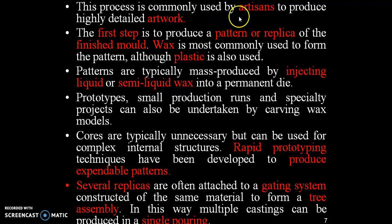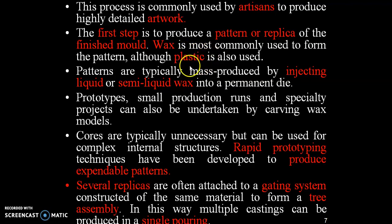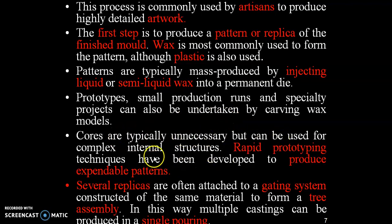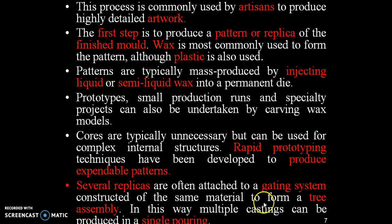Most artisans use the investment casting process for highly detailed artwork. The first step is to produce a pattern or replica of the finished part. Wax is most commonly used, although plastic can replace wax. Patterns are typically mass-produced by injecting liquid or semi-liquid wax into a permanent die. Prototypes, small production runs, and special projects can also be undertaken by carving wax moulds. Cores are typically unnecessary but can be used for complex structures. Several replicas are often attached to a gating system constructed of the same material to form a tree assembly, allowing multiple castings to be produced in a single coating.